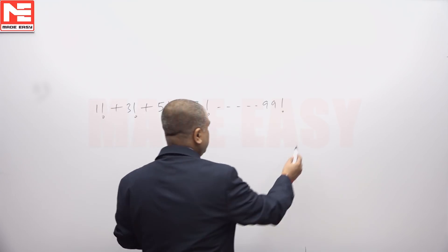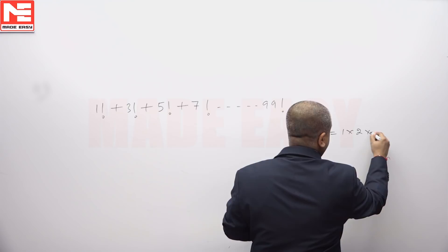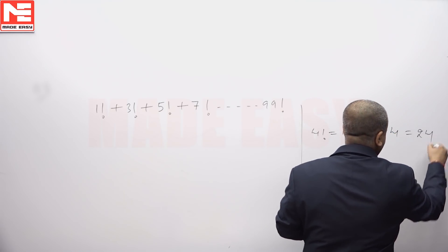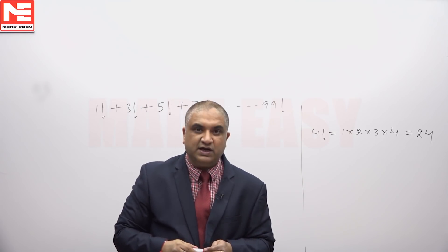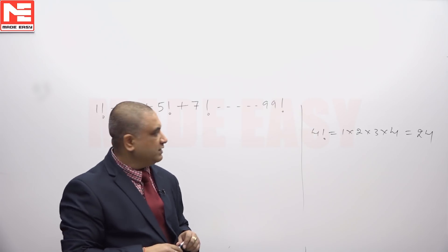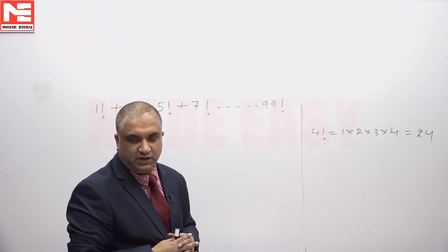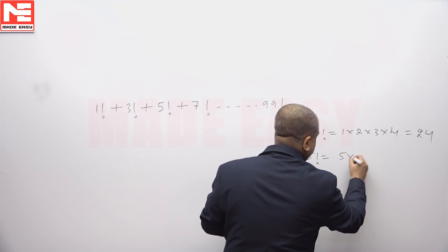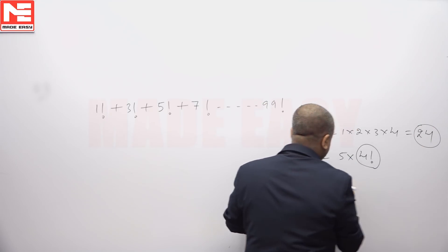Now, 4 factorial is 1 × 2 × 3 × 4, which equals 24. So 4! = 24, and any factorial beyond 4! will be a multiple of 24. For example, 5! = 5 × 4!, and since 4! is already 24, 5! is a multiple of 24.